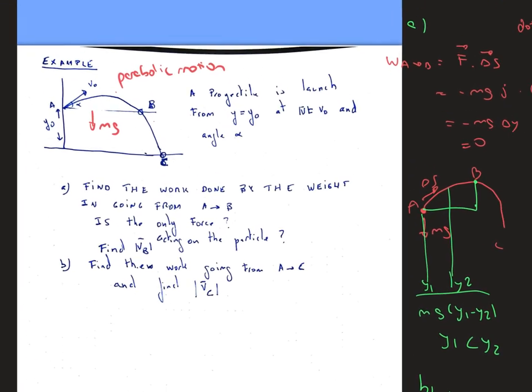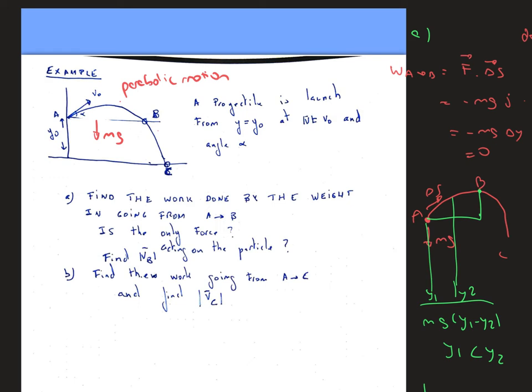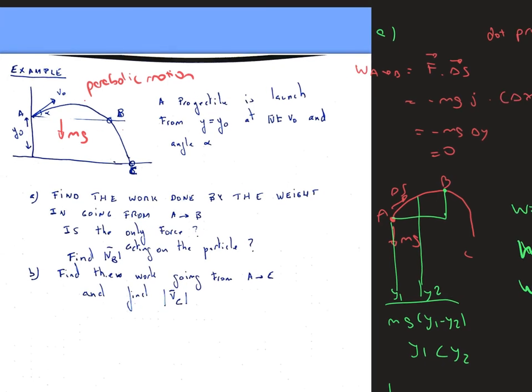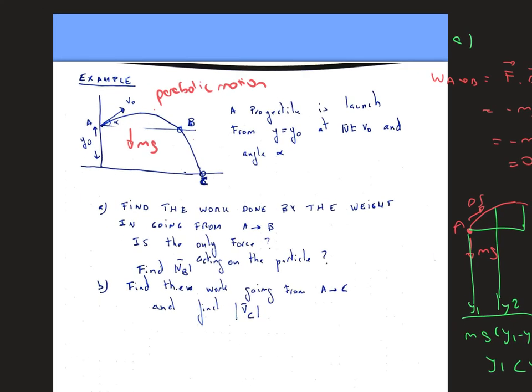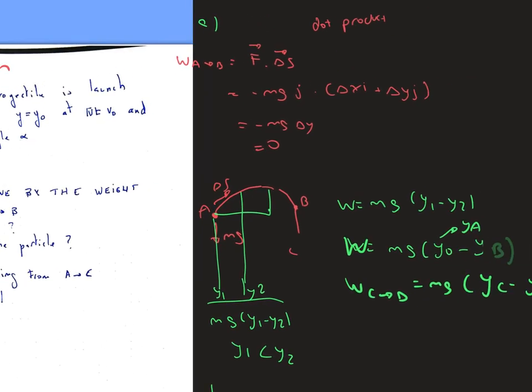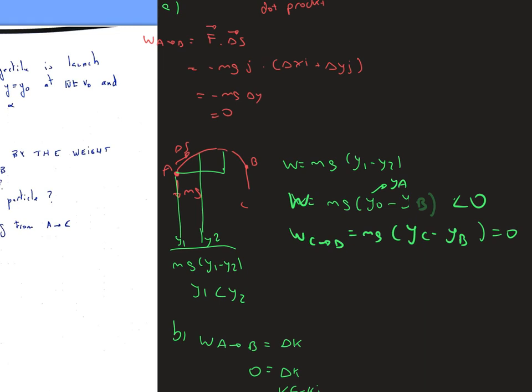In this question, we have a projectile that is launched from y equals y0 at magnitude velocity v0 and angle theta. It's going from point A, then to point B at the top based on the graph given. We also know that the weight is going downwards from this direction.